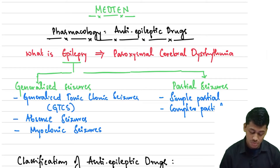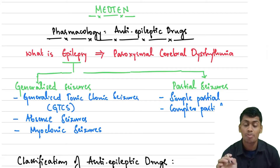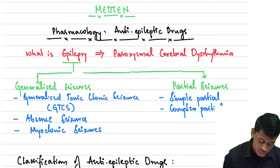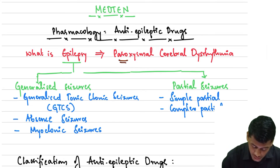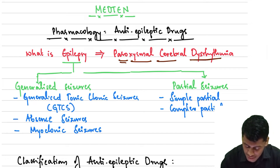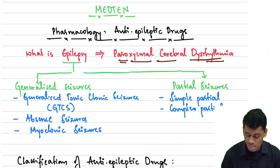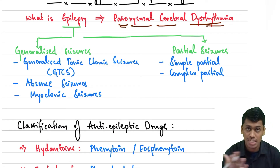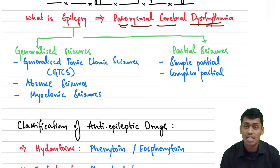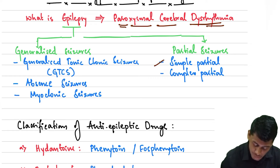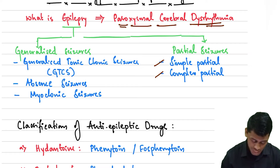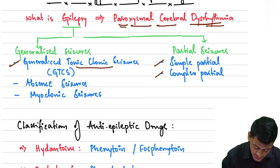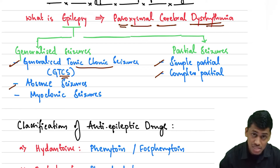Welcome to this video on the pharmacology of anti-epileptic drugs. Epilepsy is paroxysmal cerebral dysrhythmia. We generally have two types of seizures: generalized seizures and partial seizures. Partial seizures include simple partial and complex partial seizures. Generalized seizures include generalized tonic-clonic seizures (GTCS), absent seizures, and myoclonic seizures.